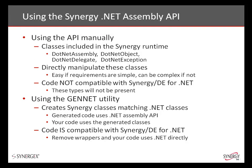There are two main ways that the .NET Assembly API can be used. The first method is for a developer to directly manipulate the classes which make up the API. At the lowest level, the API consists of four new classes in the Synergy runtime: .NET Assembly, which represents an actual .NET assembly; .NET Object, which is used to represent any .NET object; .NET Delegate, which allows developers to hook up Synergy methods to be processed in response to .NET events; and finally .NET Exception, which communicates information about any unhandled errors occurring inside the .NET environment back to the hosting Synergy application.